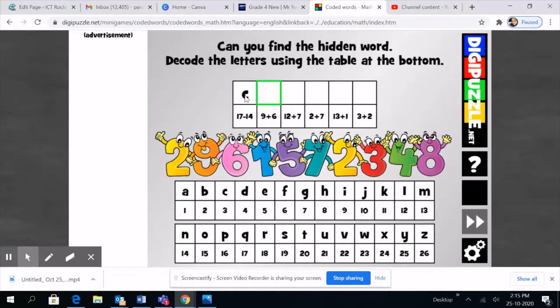Nine plus six, yeah you got it right, it is 15, so it goes on O. 12 plus 7 is 19, 19 corresponds to S. 2 plus 7 is 9, and that corresponds to I.